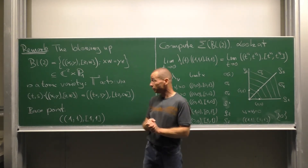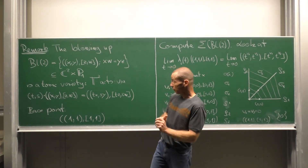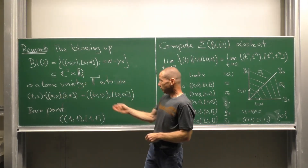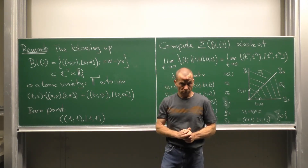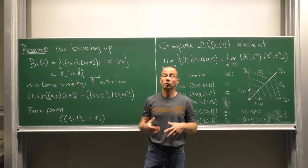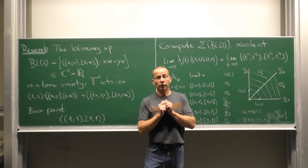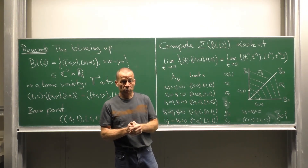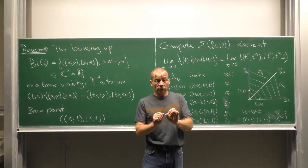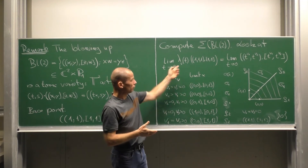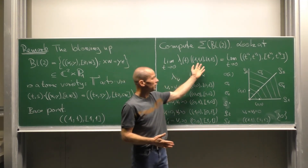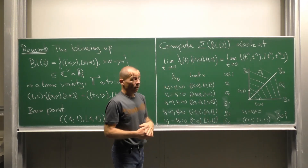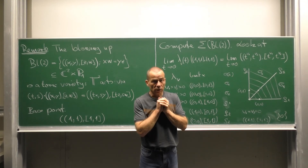The blowup of C² at the origin is a toric variety. The two-torus acts on the blowup by (t, s) · (x, y, z, w) = (tx, sy, tz, sw). Taking (1, 1, 1, 1) as a base point, we have our toric variety. Let us compute the fan of convexity cones. We look at limits of one-parameter subgroups going from C* into the two-torus. A one-parameter subgroup λ_V(t) applied to the base point looks explicitly as (t^V₁, t^V₂, t^V₁, t^V₂). It turns out there are six possible limit points.